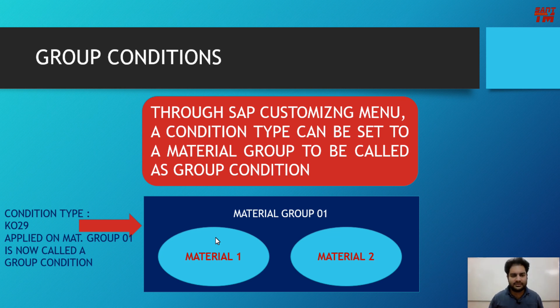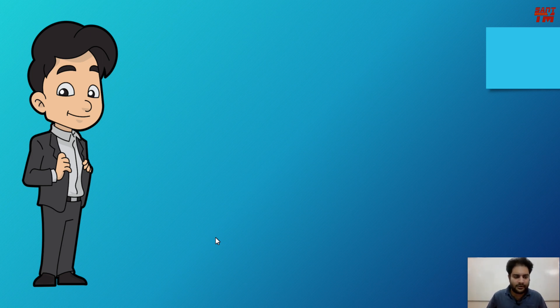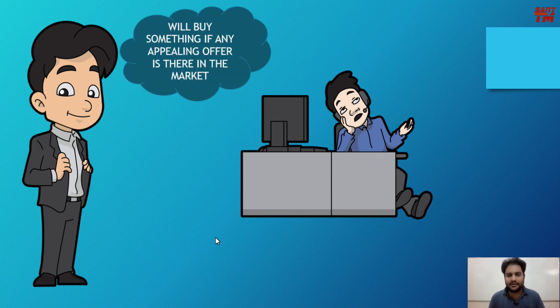Group conditions generally help a customer buy a product at a better price. Suppose you own a clothing and apparel shop and you want to buy stock to sell to your customers. You go to the wholesale market, meet a vendor who sells goods in wholesale, meaning the vendor will sell a minimum quantity before offering a better deal.